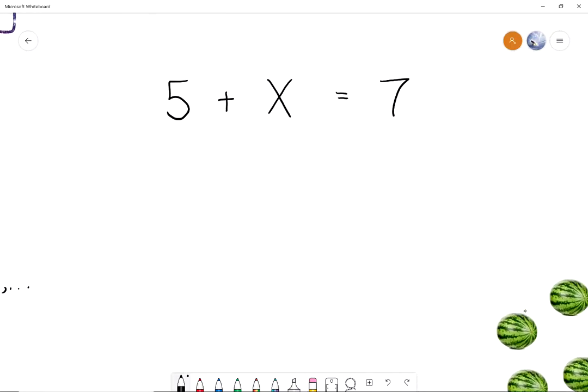So for example, we have 5 plus X equals 7. So Natalie, what is the value of X? 2. Yeah, exactly. So here, X is 2. And Natalie, how did you know that X was 2 here? I looked for a number that added to 5 gives me 7. So you looked for a number that added to 5 gave you 7, and that number is 2. So that is a solution to our equation, because that makes the equation true. 5 plus 2 equals 7.